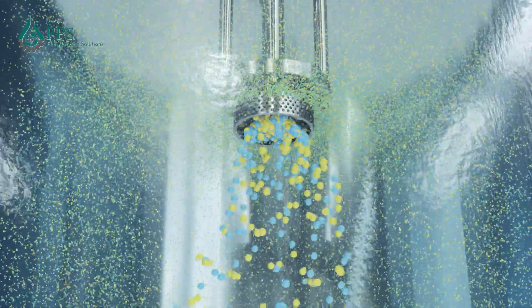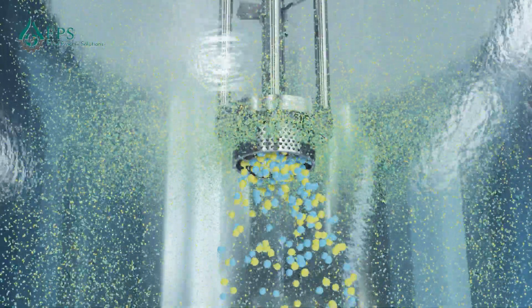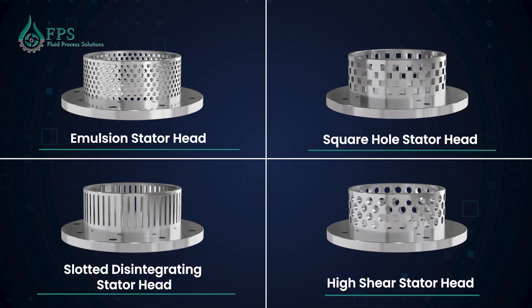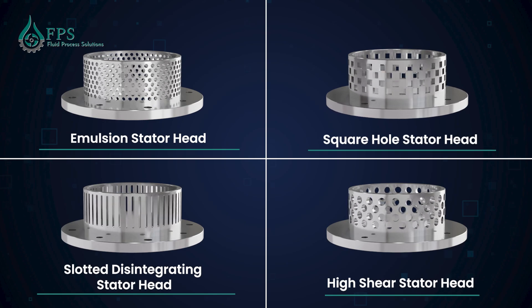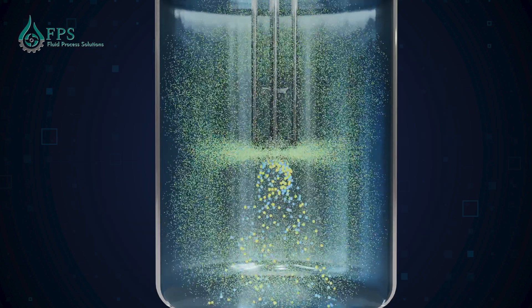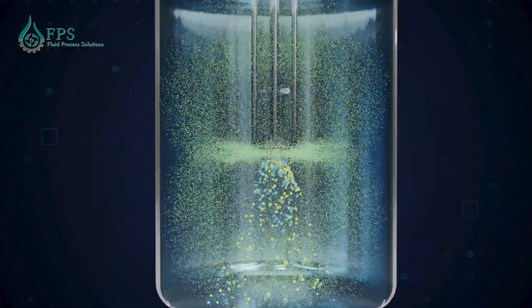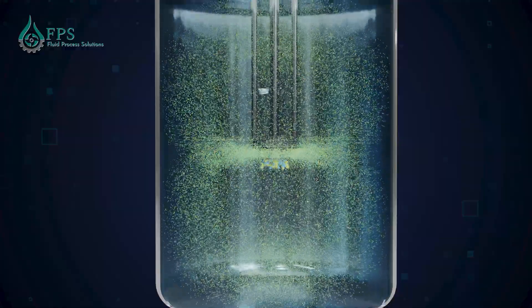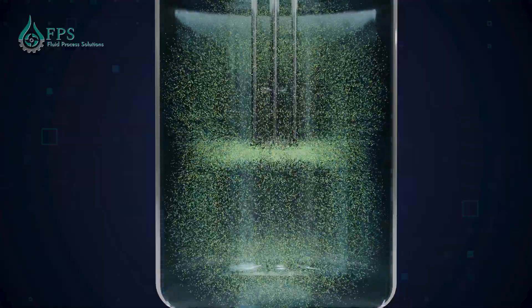The stator has different perforations selected based on the working application of the homogenizer. The sheared material is projected outward to the mixing vessel while fresh material is continuously drawn in, resulting in a continuous mixing pattern.